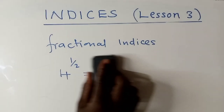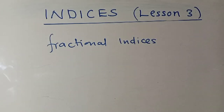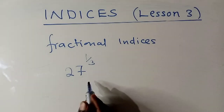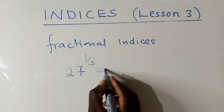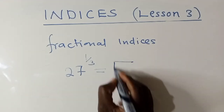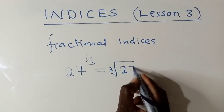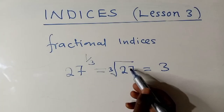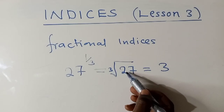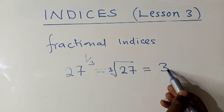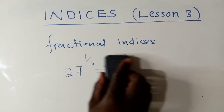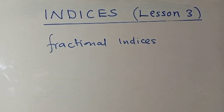Let's try another one. If you have 27 to the power one over three, how do you deal with this one? This is just a cube root — the cube root of 27. And what is the cube root of 27? It's 3, the number that you can multiply three times to get 27. That's how you deal with these fractional indices.